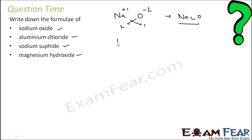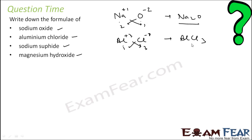For aluminium chloride: aluminium is metal written first, chlorine is non-metal written second. Aluminium has a charge of plus 3, chlorine has a charge of minus 1 — balance gives 1 and 3, so you get AlCl3. Then sodium sulphide: sodium is plus 1, sulphur is minus 2 — sodium is metal written first, sulphur is non-metal. Charge balance gives Na2S.